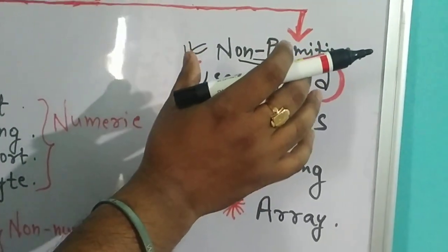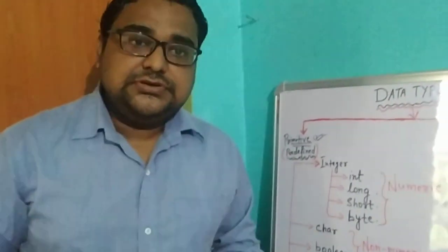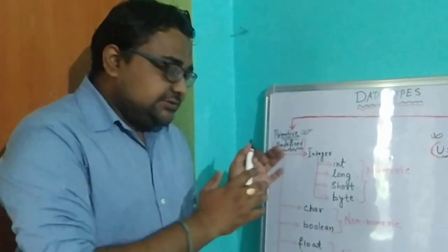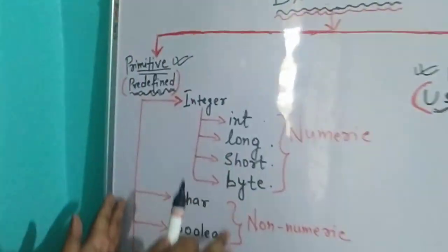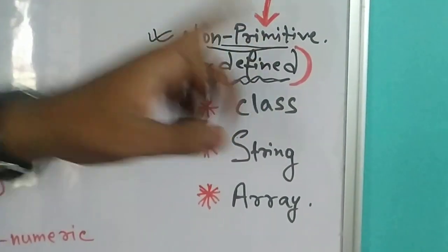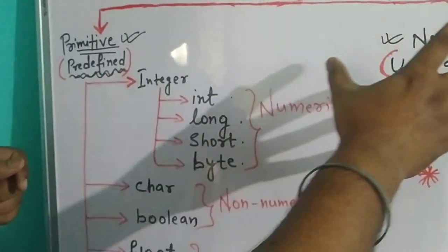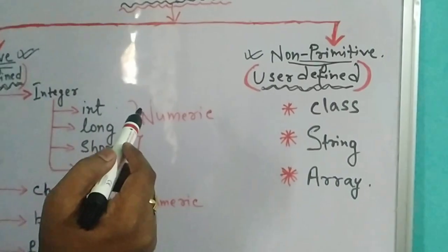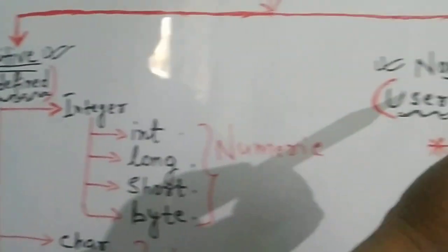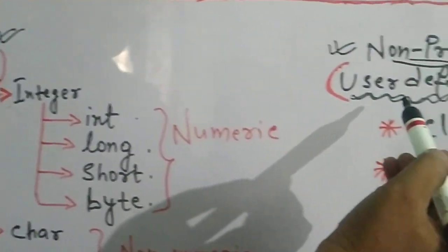User-defined means those who are using a computer are called users. When users use the primitive datatypes and combine them to make something else, that is called non-primitive. By the combination of these primitive datatypes we make non-primitive. So two datatypes are there: one is primitive — predefined — and one is non-primitive — user-defined.